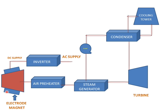MHD can also be used for electricity generation. This MHD creates DC power supply and AC power supply with the help of an inverter. The working fluid used in the MHD is then passed through an air preheater, which preheats the air used in the steam generator for fuel burning. This steam generator is connected to a turbine, then a condenser, cooling tower, and pump — the full thermal power plant cycle. So MHD is used for power generation and air preheating as an accessory for the thermal power plant.